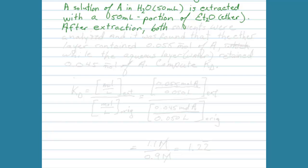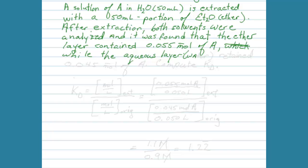And let's say we do this extraction and then after the extraction we analyze both of the layers, both of the solvents that were involved in the extraction. And what we can do is figure out how much of the analyte was in each one of the solvents. Let's say that we found that in the ether layer there were 0.055 moles of the analyte found.